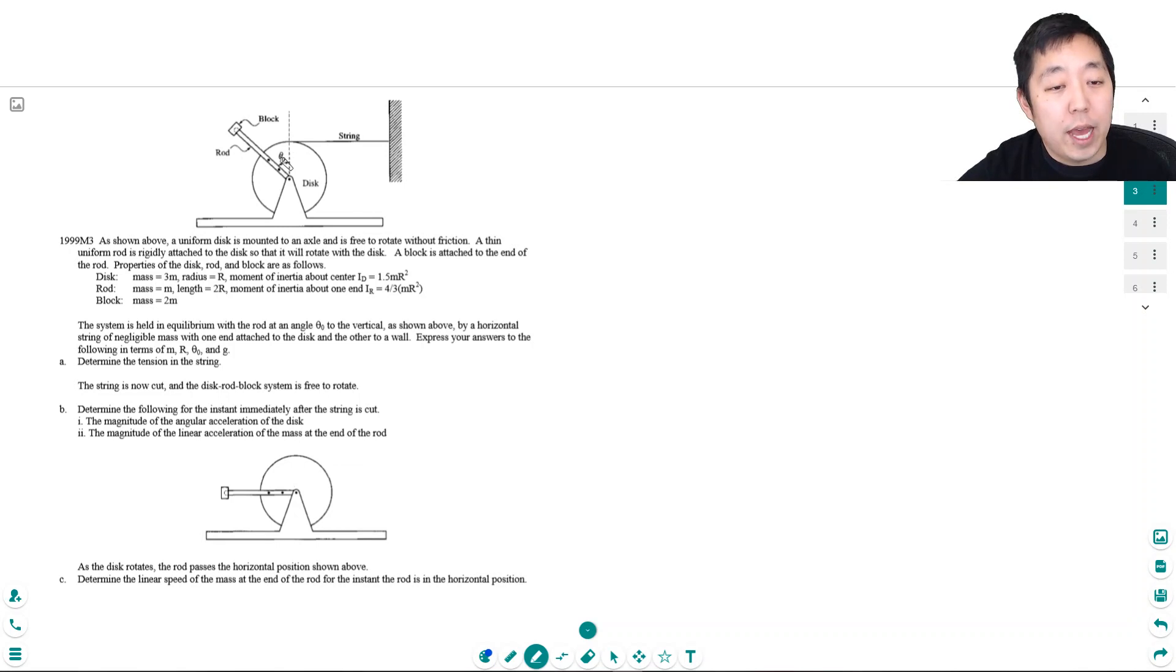We have a uniform disc mounted to an axle and free to rotate without friction. A thin uniform rod is rigidly attached to the disc so that it will rotate with the disc. A block is attached to the end of the rod. When they say moment of inertia, that is another word for rotational inertia. They basically give you the rotational inertia of everything and the block is a mass of 2m. The system is held in equilibrium with the rod at angle theta nought with respect to vertical by a horizontal string of negligible mass. Express your answers in the following terms: M, R, theta nought and G. Determine the tension in the string.